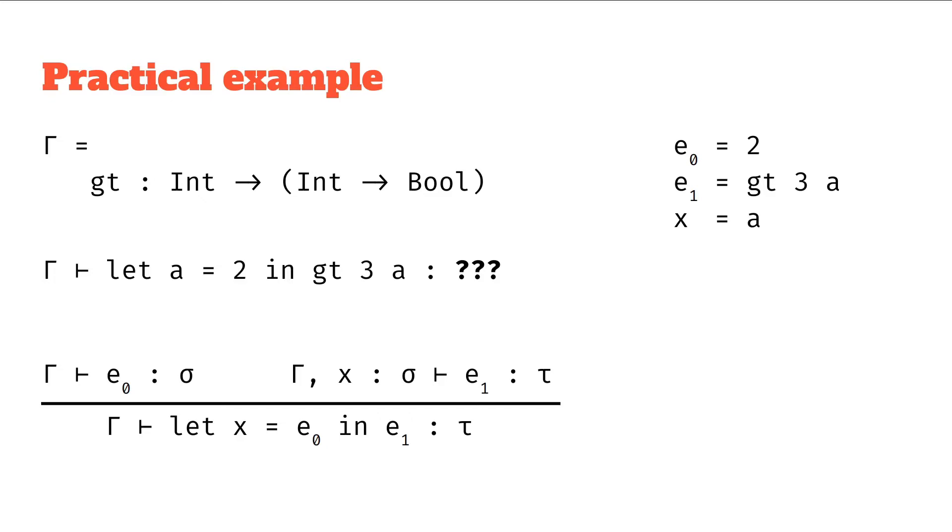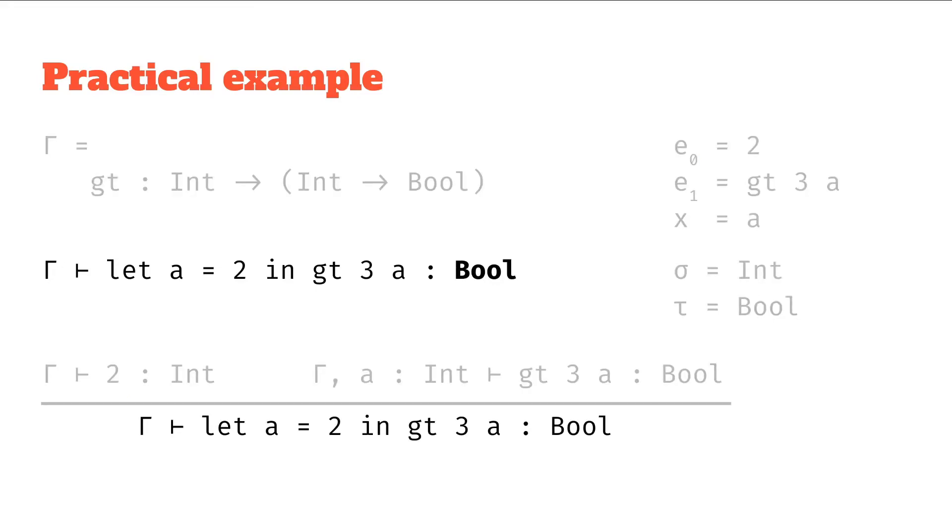And next we can make some assumptions about what the types might be, or again you could work upwards and figure out these are the type constraints that the rule imposes and do the unification process. But for the sake of time, let's say: how about we try sigma as int and tau as bool? So we'll try substituting all that in, and we get this, and there we have an answer.